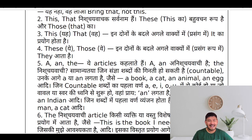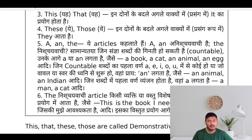The basic thing is that the articles A and AN are used where there are vowels — A, E, I, O, U. For example: this is the book I need, using 'the' to specify a particular book.